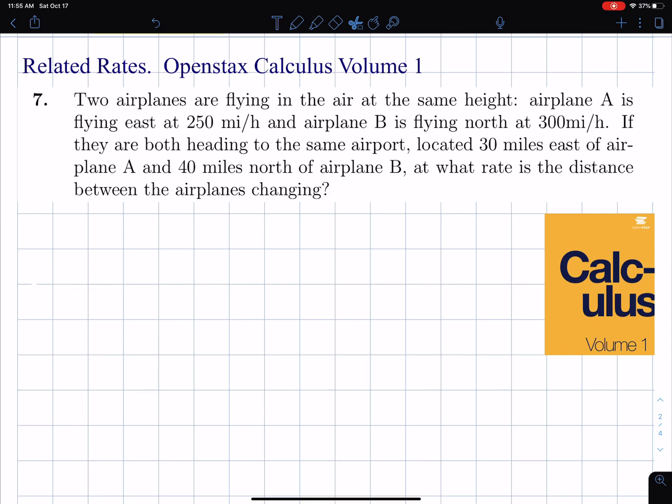Okay, we're doing a related rates problem from OpenStax Calculus Volume 1. This is Chapter 4, Number 7. It's a classic problem. You're going to see these in all the calculus books. It's the OpenStax version of it. Different hamburger restaurants do their hamburgers a little differently, but they're more or less pretty similar.